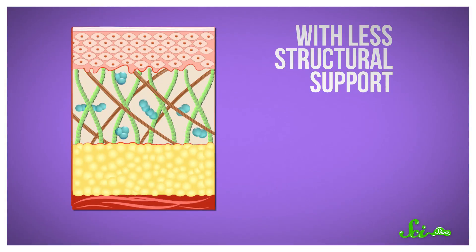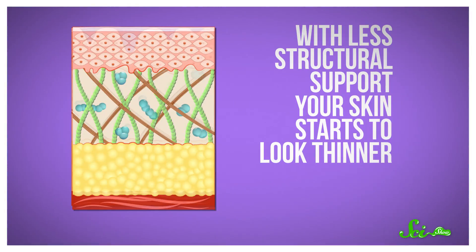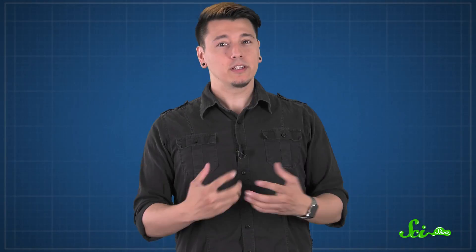As you get older, the production of these extracellular matrix molecules naturally starts to slow down. With less structural support from your dermis, your skin starts to look thinner and build up wrinkles. So we still haven't discovered a fountain of youth to fight against biochemical aging, but the biggest cause of wrinkles isn't getting older, it's environmental damage, like from the sun.